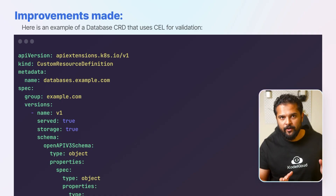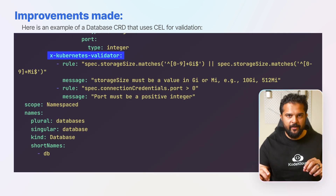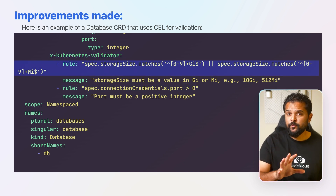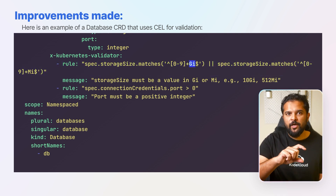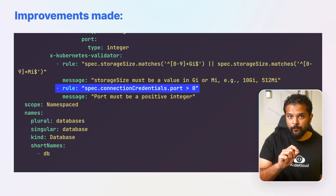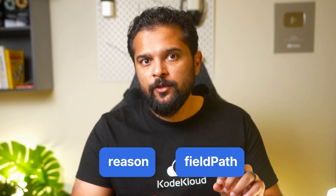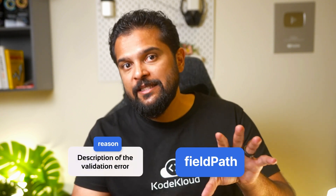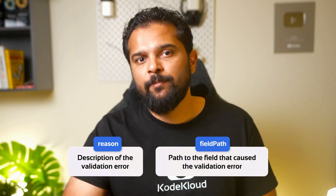Here's an example of a database CRD that uses CEL for validation. We add a section called x-kubernetes-validator and define a list of rules under it. The first rule specifies that spec.storageSize must match the expression of having numbers followed by Gi or Mi at the end. The second rule states that the port field under connection credentials must be greater than zero. If a database resource doesn't meet the validation criteria, the new reason and fieldPath fields provide clear feedback pinpointing the exact issue.